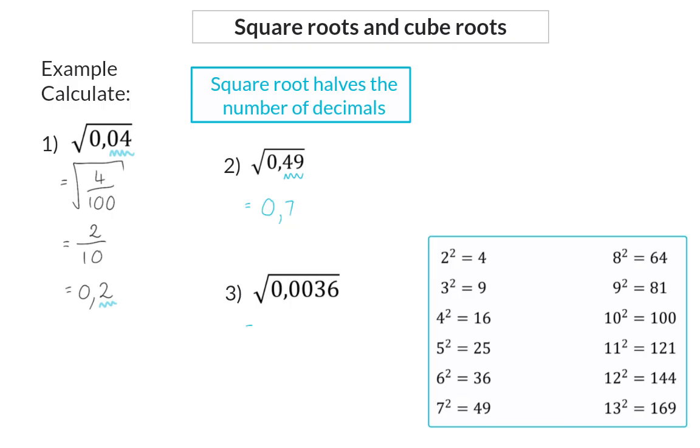In example 3, I'm going to start off determining the square root of 36, which is 6. The number of decimals here is 4 decimals, which will now be halved to 2 decimals, of which 6 will be the second one. Therefore, I need to add a decimal in front to get the answer of 0.06.